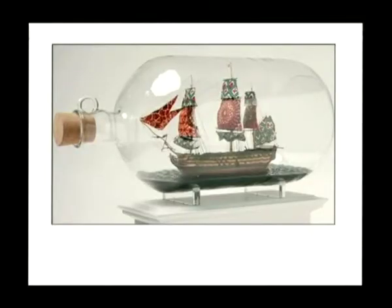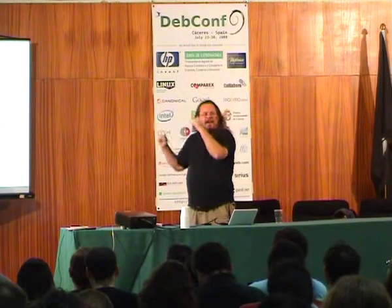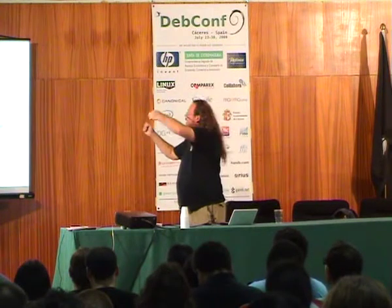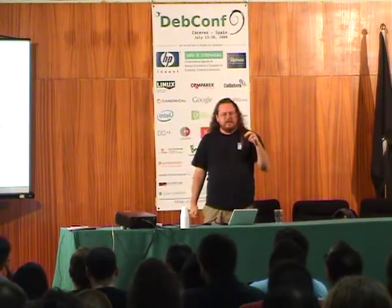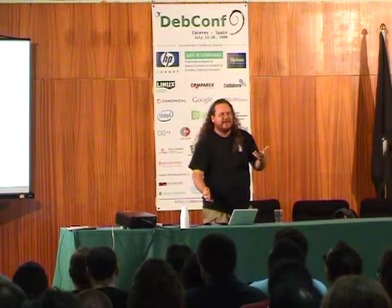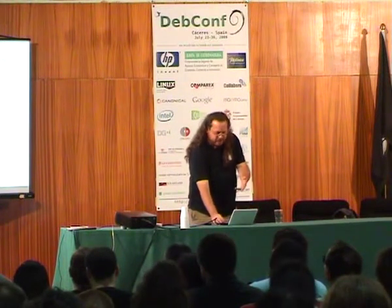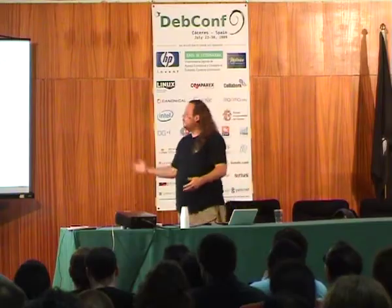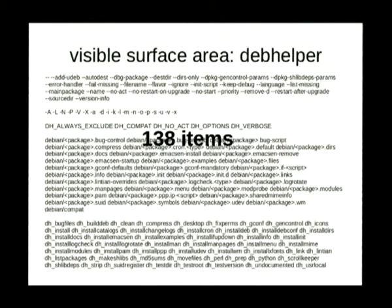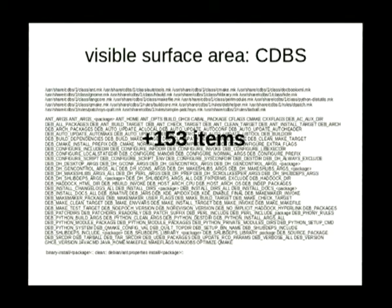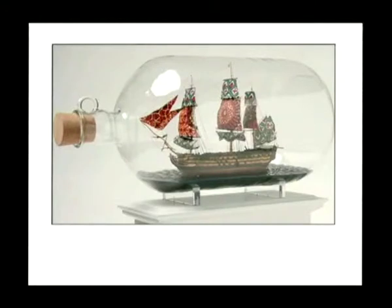When building a ship in a bottle, you need all kinds of specialized little tools to reach in through the neck of the bottle and lift the sails up, attach the rigging, adjust the cannon just right. CDBS is a whole workshop of tools reaching in through the neck of the bottle of environment variable settings and making changes. Sure, it looks really pretty when you're done, but it's really complicated to get there.